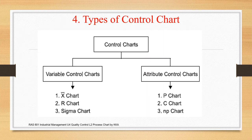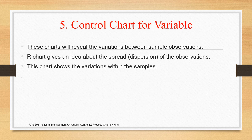Control charts are of two types: variable control charts and attribute control charts. In variable control charts, we deal with variable characteristic data. Variable charts can be categorized as X-bar chart, R chart, and sigma chart. Whereas attribute charts deal with the qualitative aspects of data. Charts in the attribute control chart category include P chart, C chart, NP chart, and U chart. We will look at all these charts and illustrations in detail.